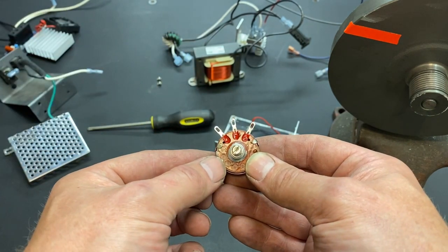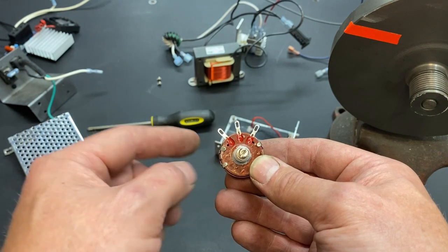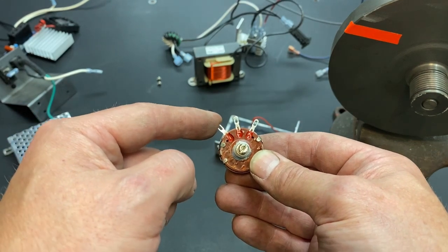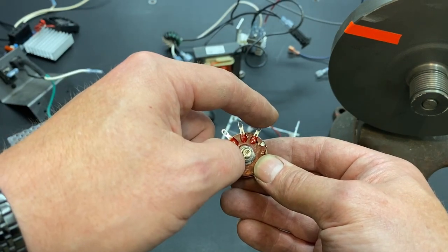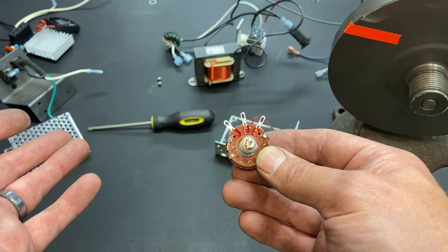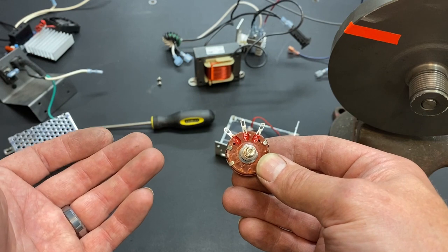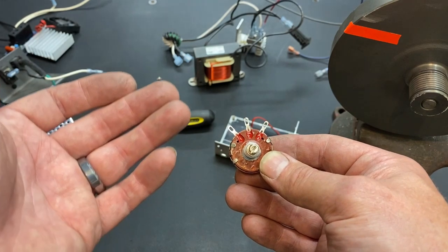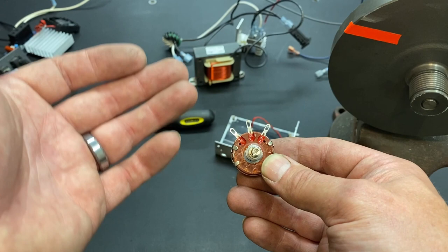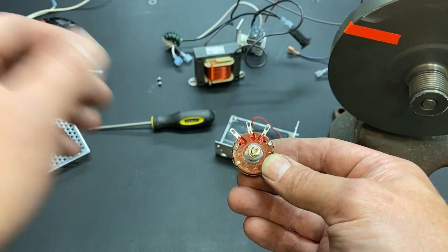Now, like I said, that's how it is for most potentiometers, but I have seen some where this is the minimum and this is the maximum. And if you're not, if you don't have a meter to test it with, you can hook it up to your SCR voltage controller and if it's backwards, then the knob will work counterclockwise.